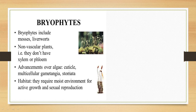Bryophytes are a little more advanced compared to algae. They have a cuticle — not exactly tissues, but organized cells. They have gametangia, which are the structures that bear gametes. These gamete-bearing structures are multicellular. They also have stomata for exchange of gases, and they require a moist environment, especially for sexual reproduction.